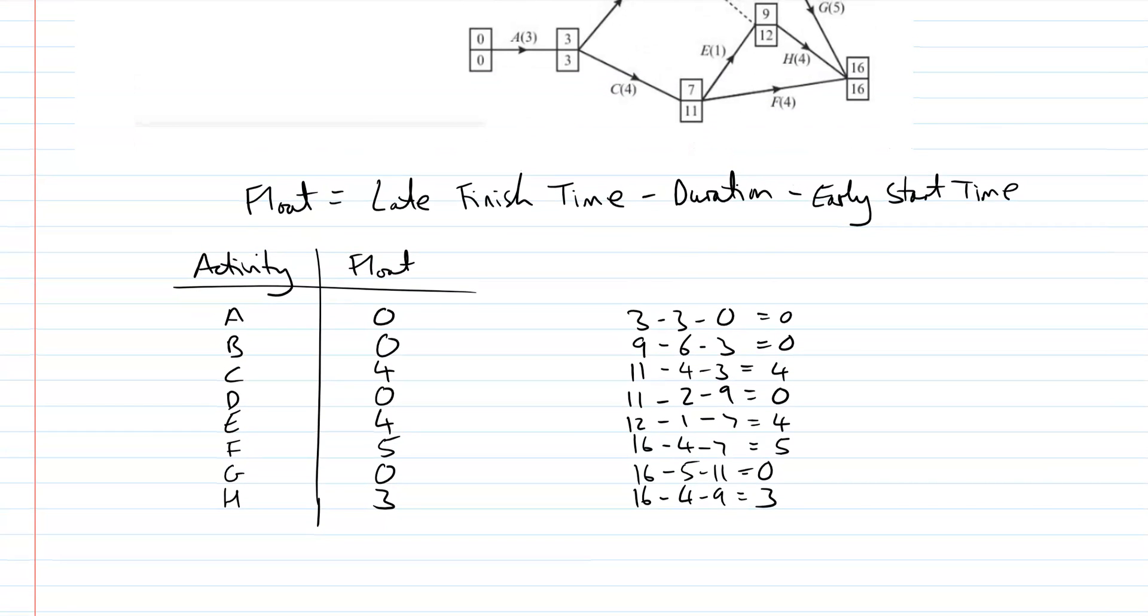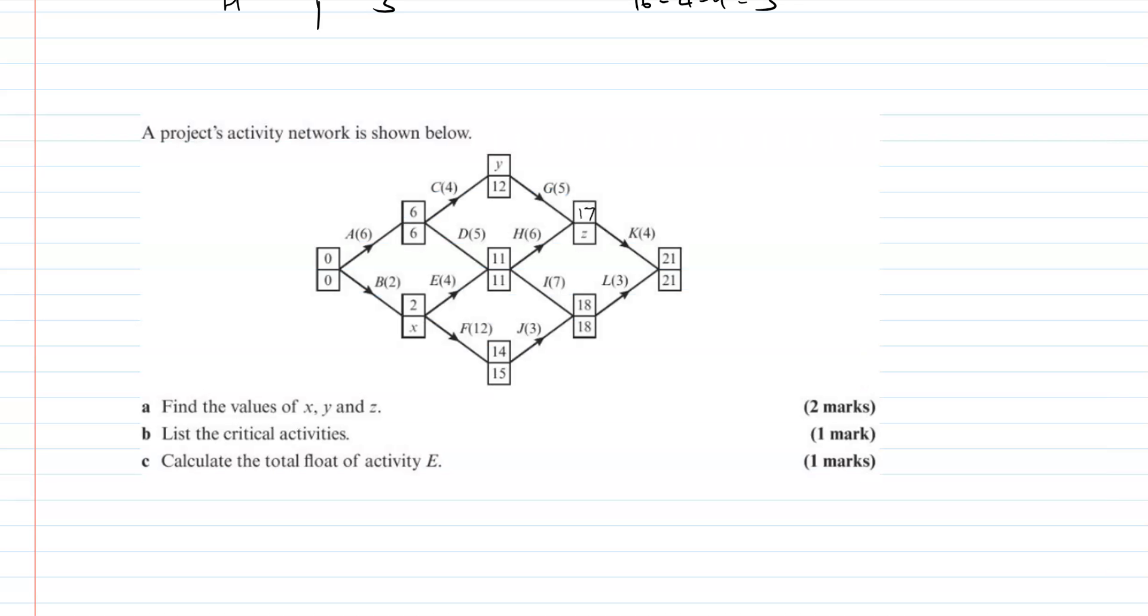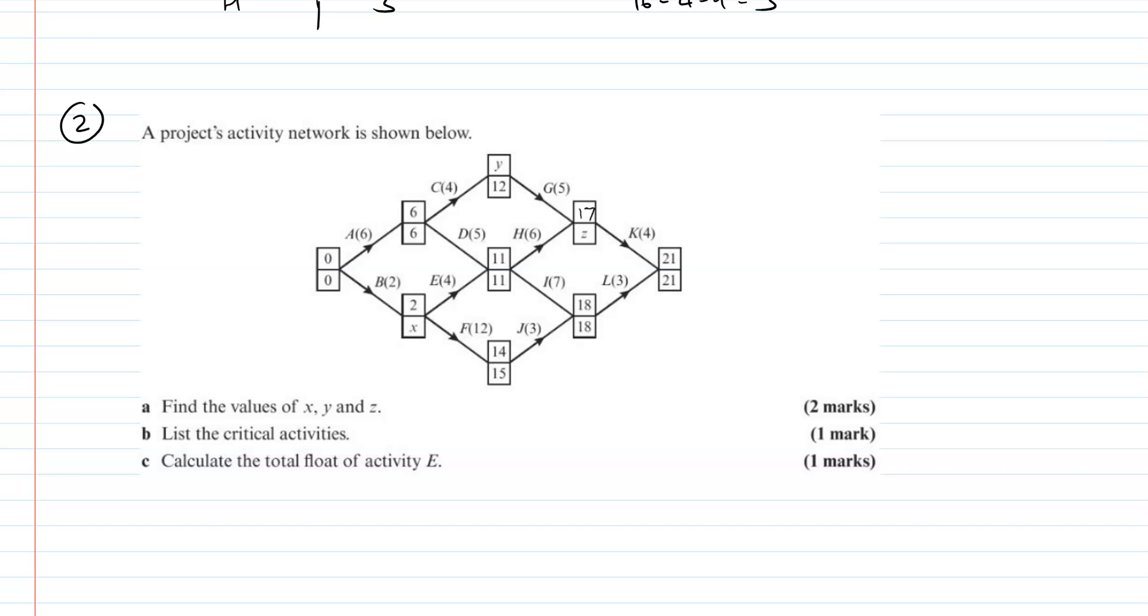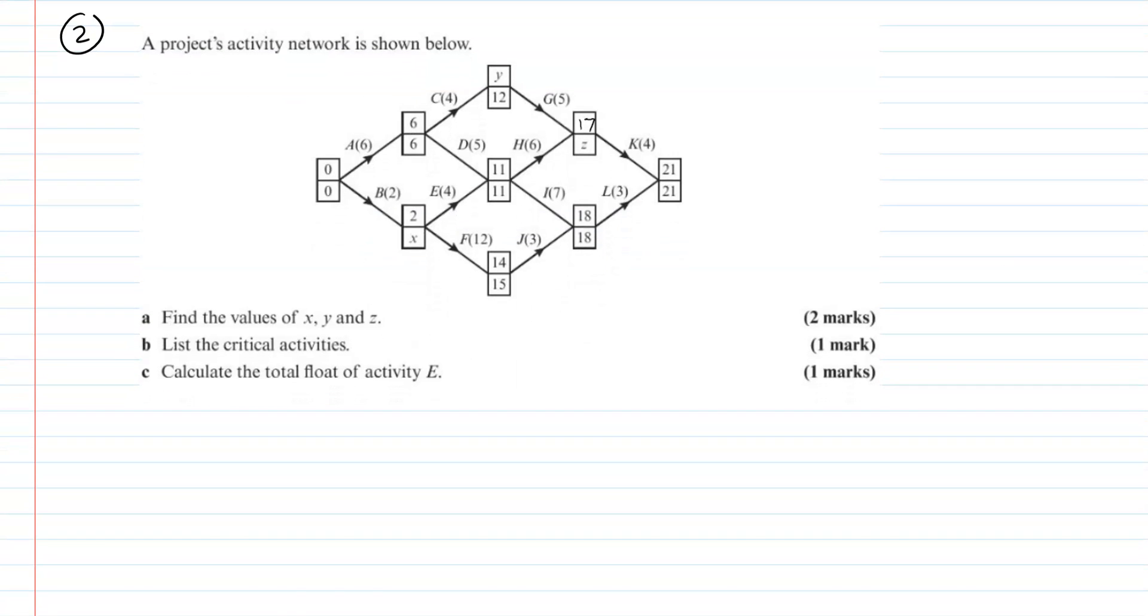And there's one more question which we're going to look at. There's number two. A project's activity network is shown below. Find X, Y, and Z. List the critical activities. Calculate the float of E. So just four marks, should be quite a quick question. So let's look at part A. So X, Y, and Z to start with. So where's X? So X is down here, isn't it?